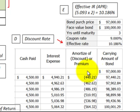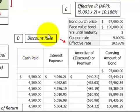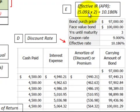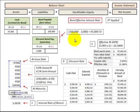We used the discount rate — calculated using the internal rate of return on those cash flows — to amortize the bond. This equals the effective interest rate: 5.093% per semi-annual period times two gives 10.186% per year, which is the annual percentage rate. This is a summary of the terminology and how we calculate and apply the effective interest rate, in this case applied to a discounted bond.